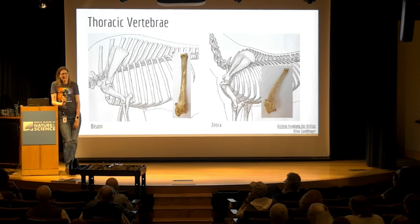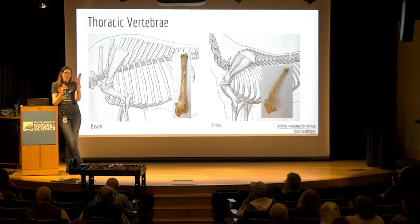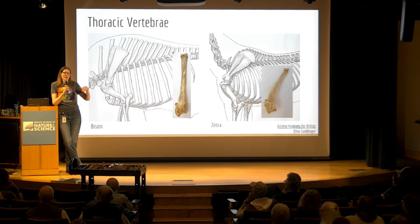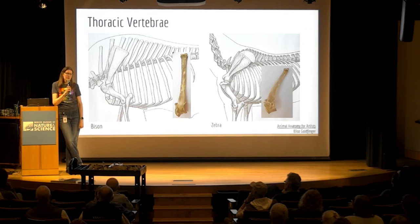Question about caudal vertebrae in dogs like corgis or pugs with curly tails — do they have different shapes or structure? That's going to be the way the ligaments and tendons pull. The actual bony structure of the vertebrae is going to be the same; it's the soft tissue — how the ligaments and tendons attach and pull — but the overall bony structure itself isn't going to look any different.